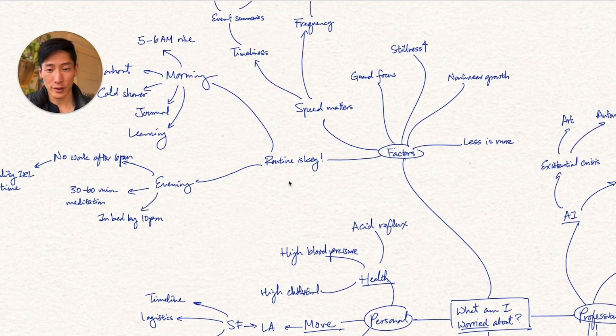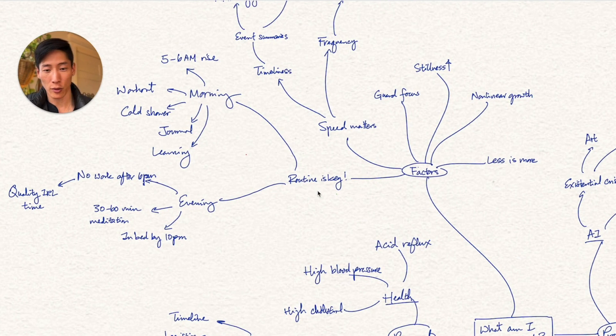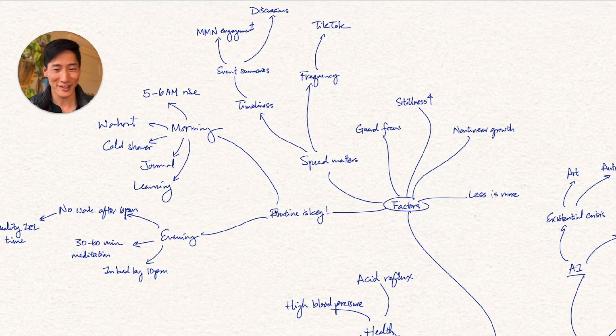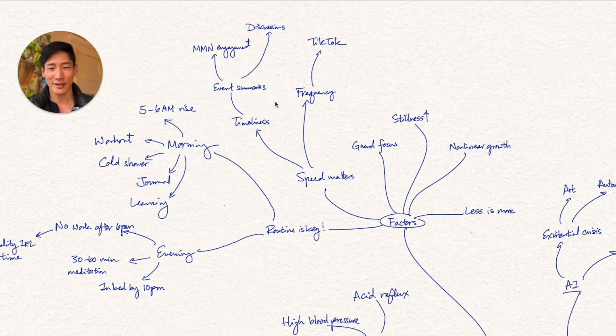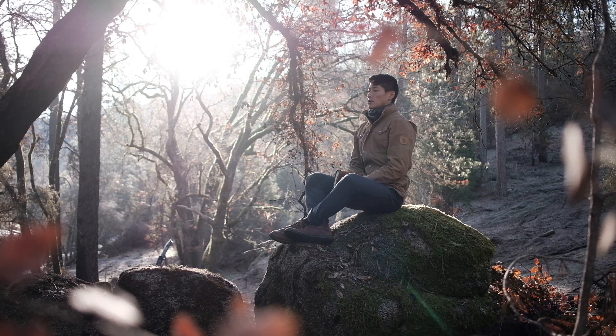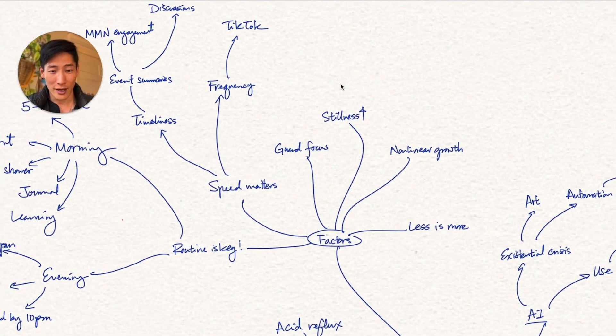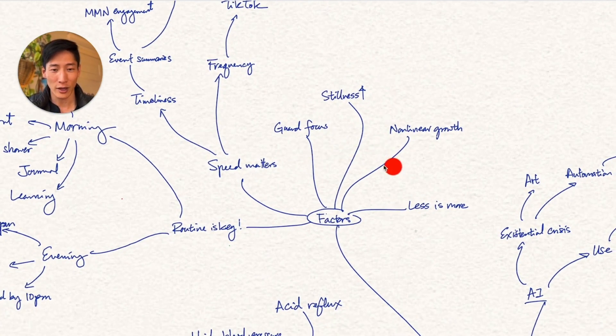So the things under factors for me is routine, which is super important for my productivity, managing my stress and everything. Specifically having a good morning routine as well as an evening routine here. If I don't have that, I am a hot mess most of the time. And then speed matters, especially when it comes to actually being responsive to my community, specifically doing all these event summaries that we have on a weekly basis. And then frequency. So frequency on content creation, TikTok especially, is actually extremely important. Guard my focus as well as stillness. These two things are essential to my mental and emotional health and productivity. If I don't have this, I'm going to be pulled in a gazillion ways, especially given all the stuff that I'm working on.